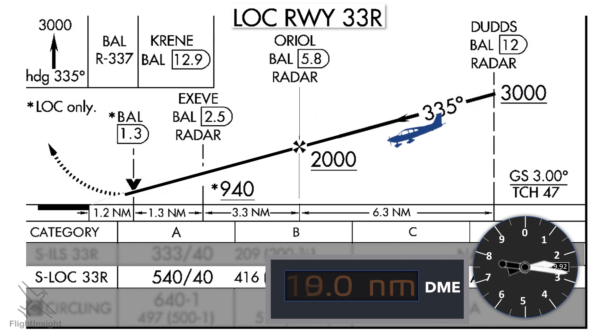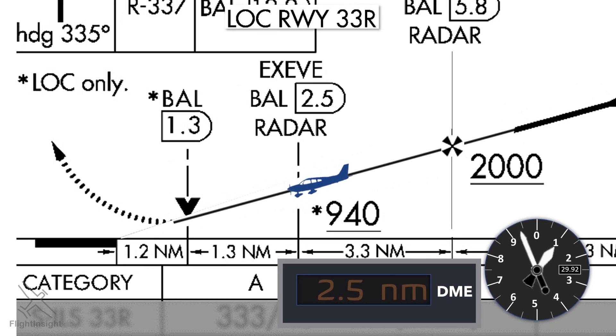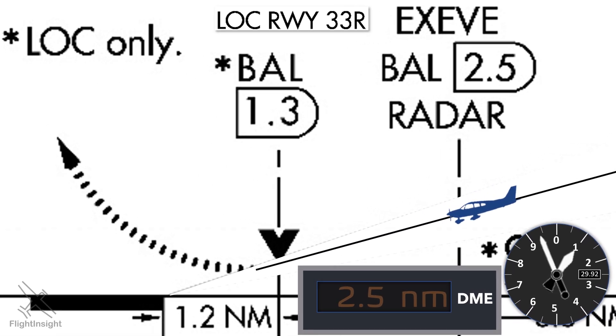The next fix, ORIOL, is the final approach fix, as noted by the Maltese cross, and is at 5.8 DME. So we'll maintain 2,000 until then, then start the final approach. The next fix is EXEVE at 2.5 DME and 940 feet. From EXEVE, we'll continue descending down to the minimum descent altitude, MDA, of 540 feet.